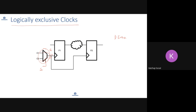For logically exclusive clocks, when you are doing STA, STA will by default propagate both clocks. C1 will reach here, C2 will also reach here, so you will have two sets of timing paths: C1-to-C1, C1-to-C2, C2-to-C1, and C2-to-C2, because both clock possibilities are present at both points. If you don't tell the STA tool anything, it will time all four cases — setup and hold — with all these possibilities.